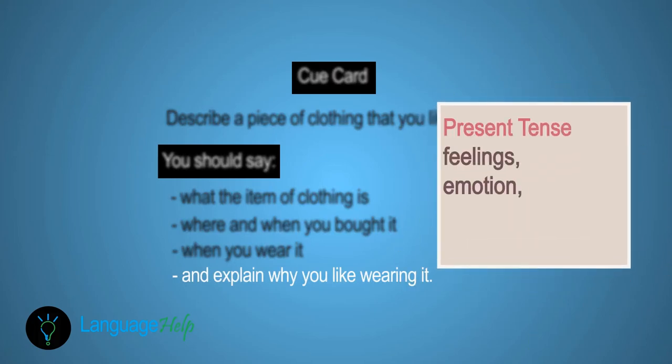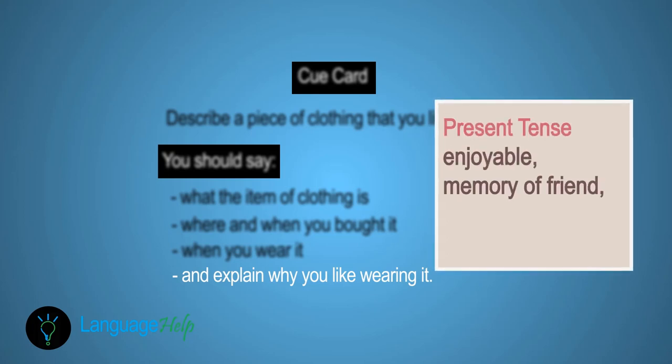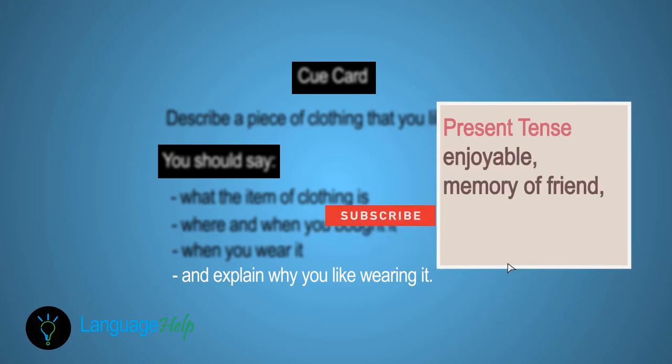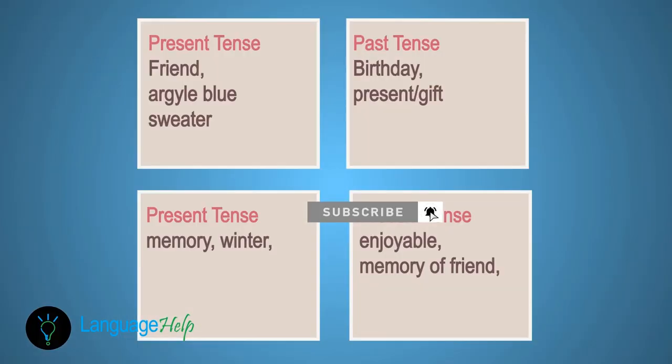The fourth and final cue is to explain why you like wearing it. Obviously, the tense here will be the present simple. Think of feelings and emotions to answer this cue. If you're following with the exercise, your paper should look something like this. Now that the box is ready and you're ready to speak, remember not to look at your notes for too long. Try to maintain eye contact with your examiner. Try to give an equal amount of time to each cue. Remember to use unfamiliar vocabulary, a few collocations, idioms, and a mix of tenses if you can. Use these correctly or not at all, because you need to stay on the safe side.